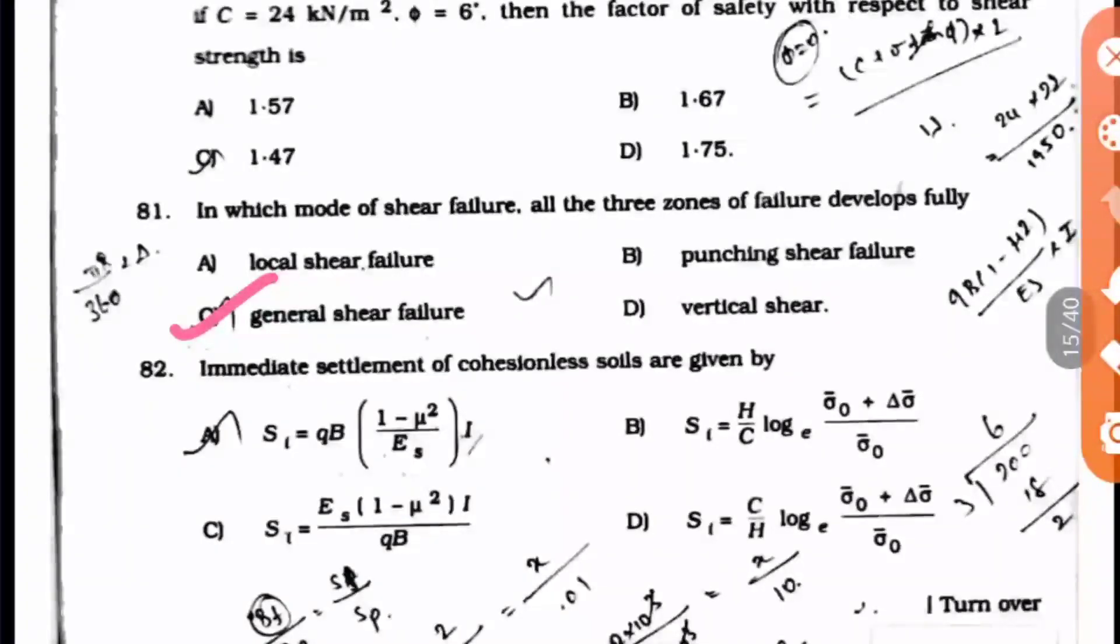Question 82: Immediate settlement of cohesionless soils is given by which formula? Here option A is the right answer. We have studied this formula in the consolidation chapter with constant values for the influence factor and all, so if you want you can just revise that.